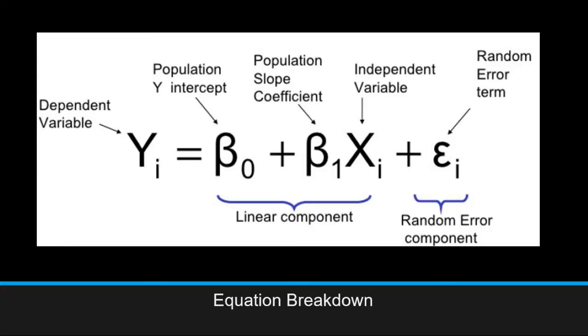This is the further breakdown of the linear regression model or equation. yi is the dependent or outcome variable, β0 is the population y-intercept, β1 is the population slope coefficient, and xi is the independent or predictor variable. Those three together are the linear component of the equation. And then εi is the random error term or random error component.